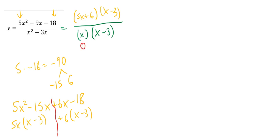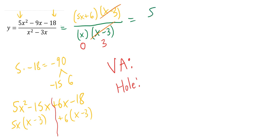My excluded values are 0 and 3 — those help me find my vertical asymptotes and holes. After canceling, my x minus 3's go away and I just have 5x plus 6 over x. My vertical asymptotes are the excluded values that remain even after canceling. Zero is still there, so my vertical asymptote is x equals 0.